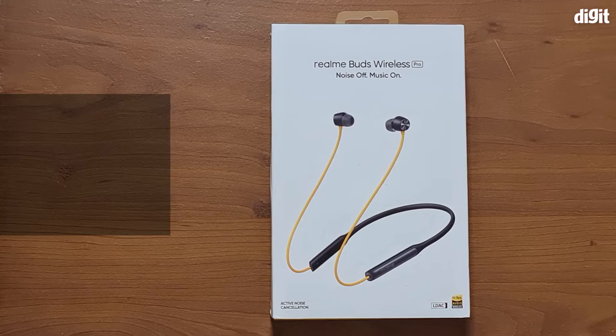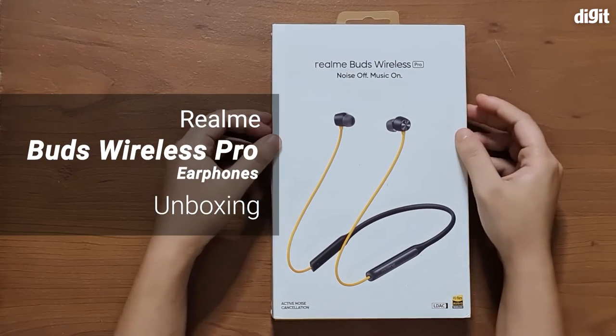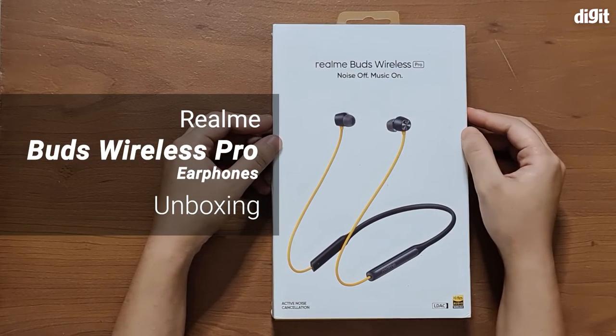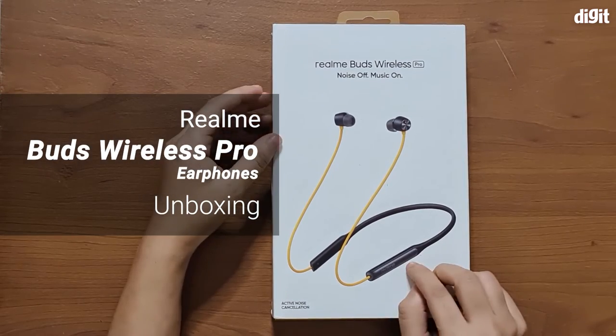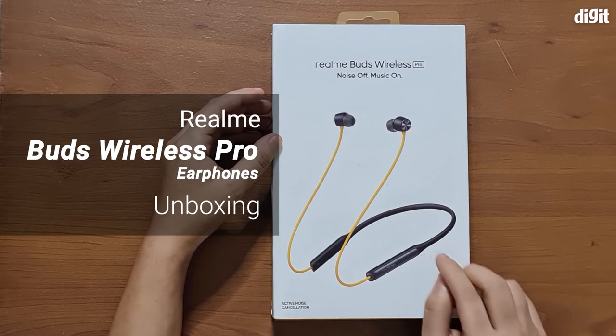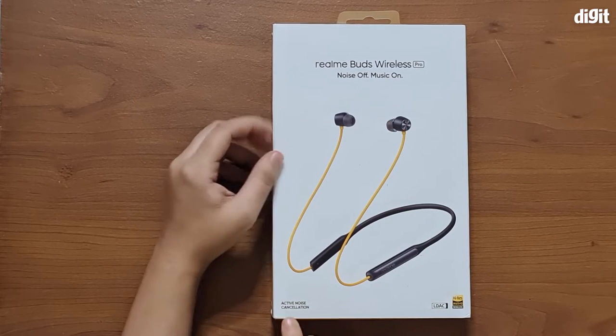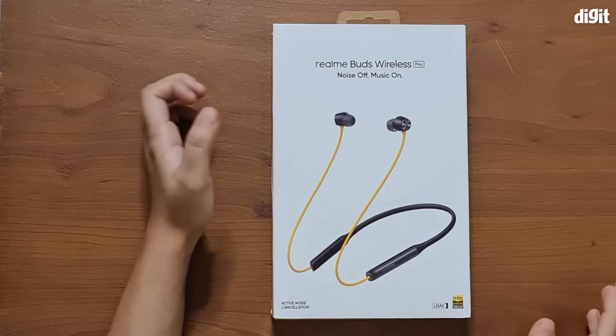Hey guys, welcome to digit.in. Today we have with us the Realme Buds Wireless Pro. These are neckband style wireless Bluetooth earphones. You can see that on the box it says active noise cancellation, which is pretty rare at a budgetary price point.